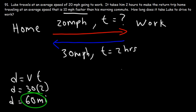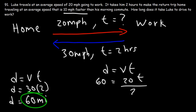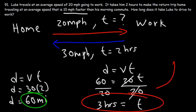Now for the first part of the problem, we can calculate T. D is still 60, V is 20. Dividing both sides by 20, the time it takes for him to drive to work is 60 divided by 20, which is 3 hours. So that's the answer for this problem.